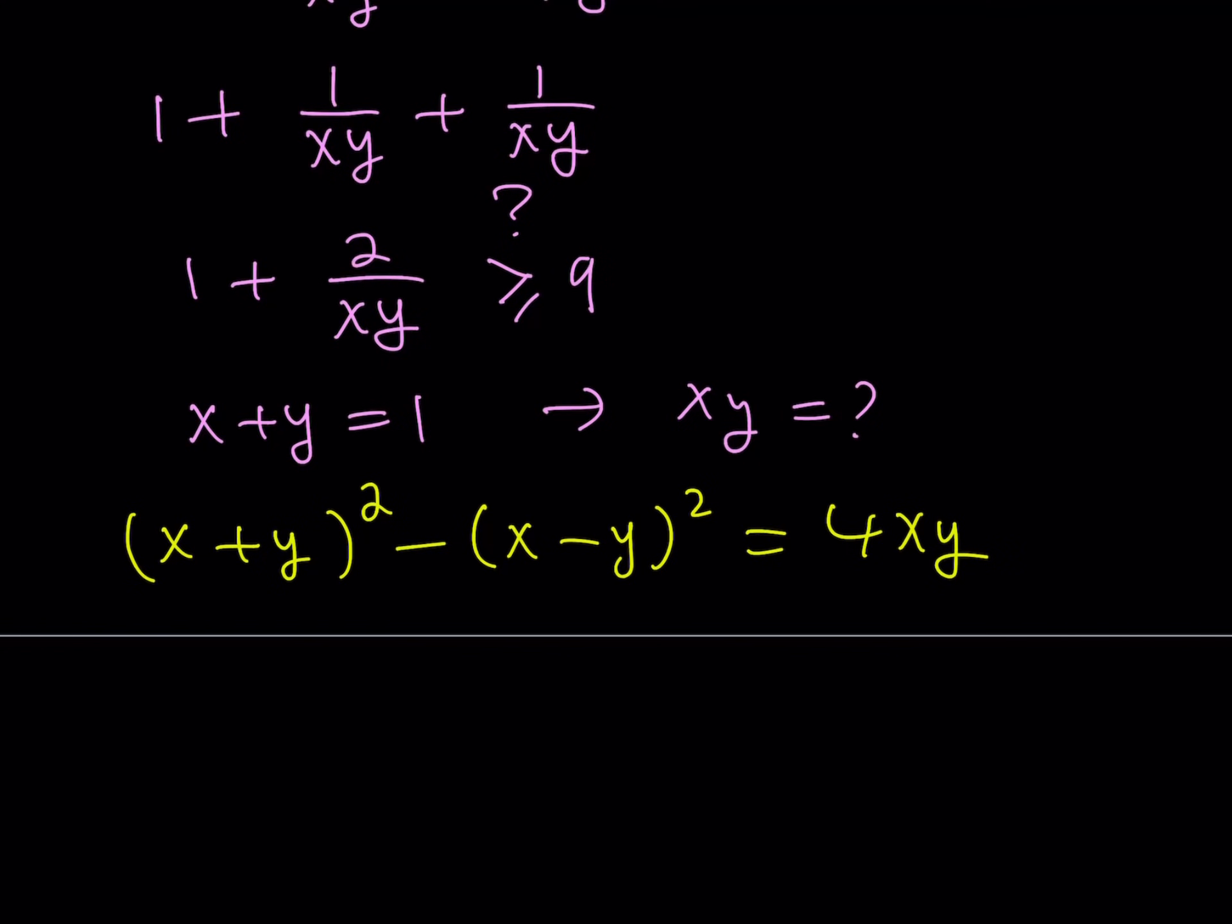x plus y quantity squared minus x minus y quantity squared is equal to 4xy. As you know, this is very helpful because it allows you to directly relate the square of the sum and the square of the difference. That's what I'm going to use today. So, this identity holds for xy real numbers. I know that x plus y is equal to 1 right there. So, let's go ahead and replace x plus y with 1.